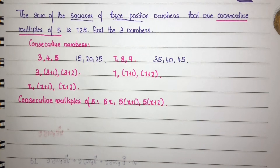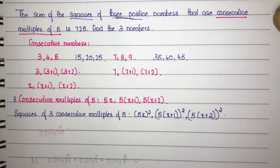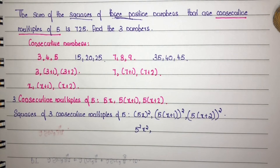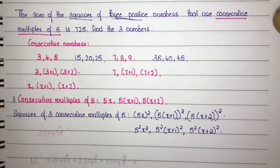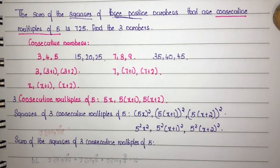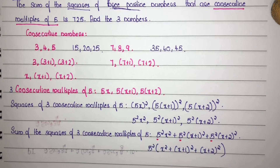Squares of the 3 consecutive multiples of 5: (5x)² can be written as 5² times x². Similarly, (5 into x plus 1)² is 5² times (x plus 1)², and (5 into x plus 2)² is 5² times (x plus 2)². The sum of the squares equals 725, so: 5² x² plus 5² (x plus 1)² plus 5² (x plus 2)² equals 725. Taking 5² as common factor out.